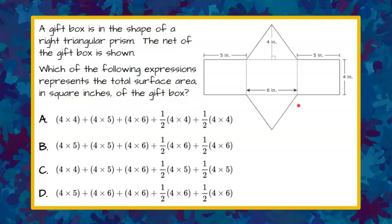So we first need to identify that we have this prism and it's got five faces. Three rectangular faces, and each rectangular face is found by doing area equals base times height.